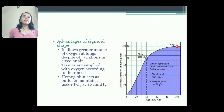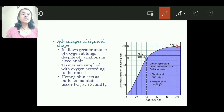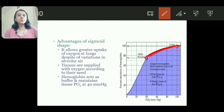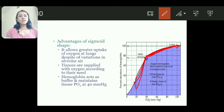The advantages of the sigmoid shape: greater uptake of oxygen is possible at the lungs because the plateau part is in the lung range and percentage saturation is high. At the tissue level, oxygen is released and tissues are supplied. Hemoglobin acts as a buffer — it takes oxygen from the lung, releases it at the tissue level, and maintains tissue partial pressure of oxygen at about 40 mmHg.